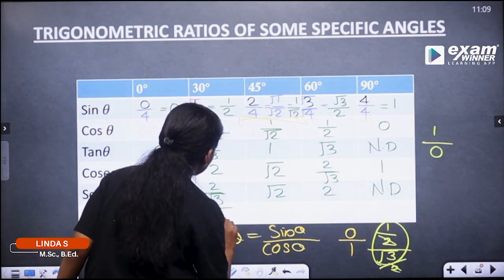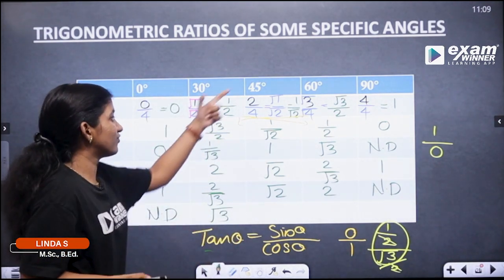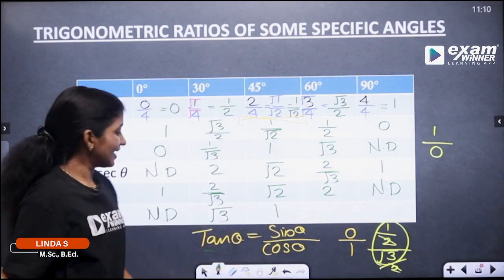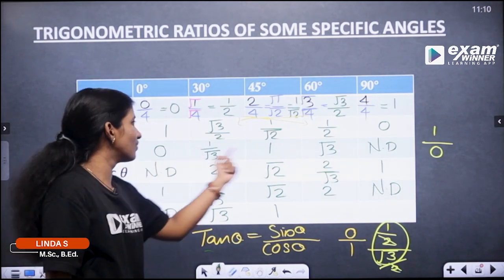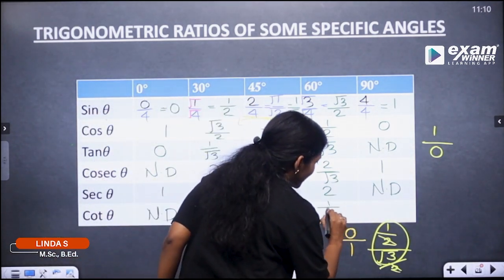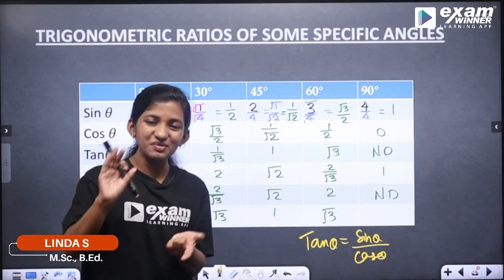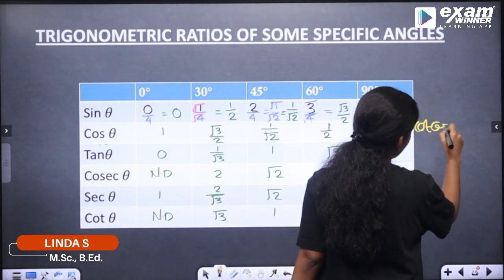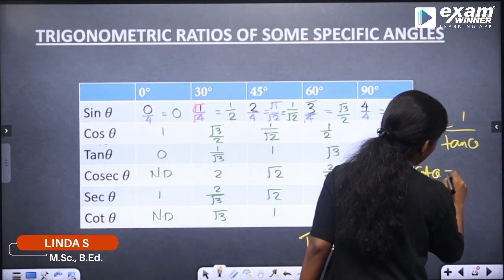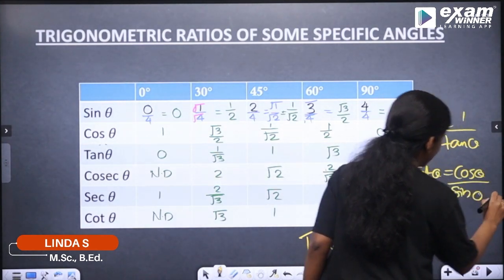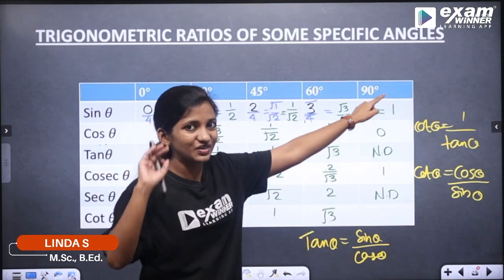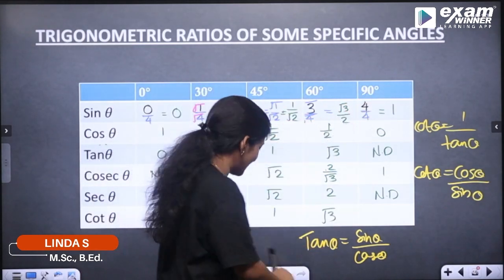Cot 30° = √3. Next, cot 45°: tan 45° = 1, so cot 45° = 1/1 = 1. Next, cot 60°: tan 60° = √3, so cot 60° = 1/√3. Cot 90°: cot 90° = cos 90° / sin 90° = 0 divided by 1 = 0. So cot 90° = 0.